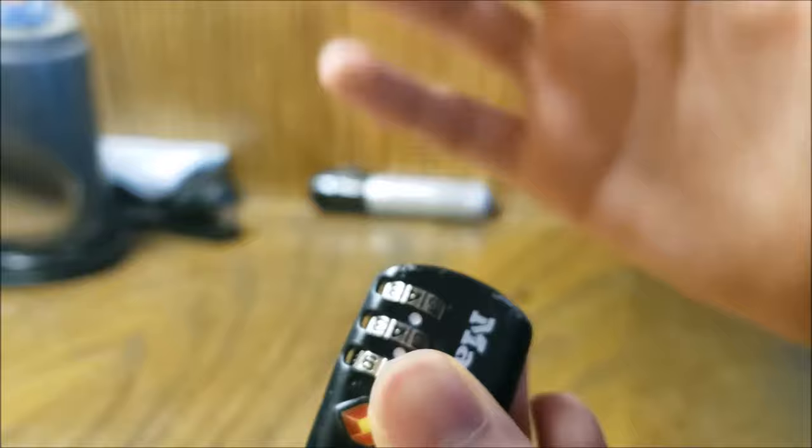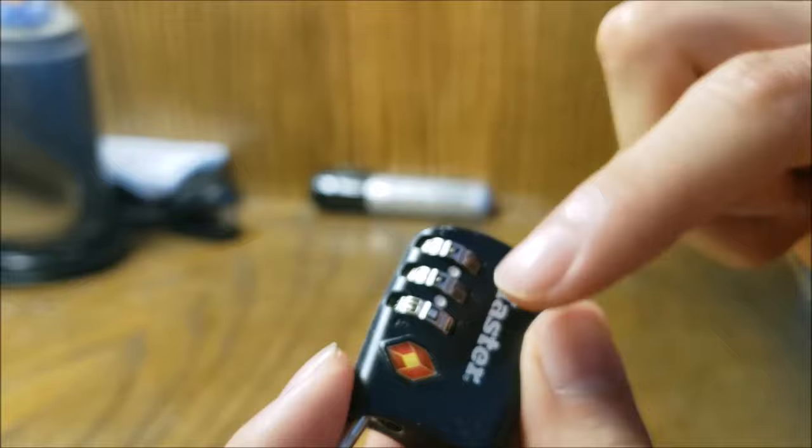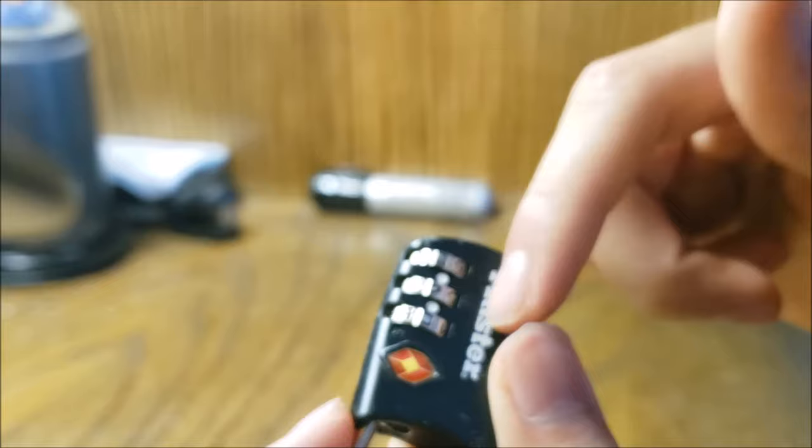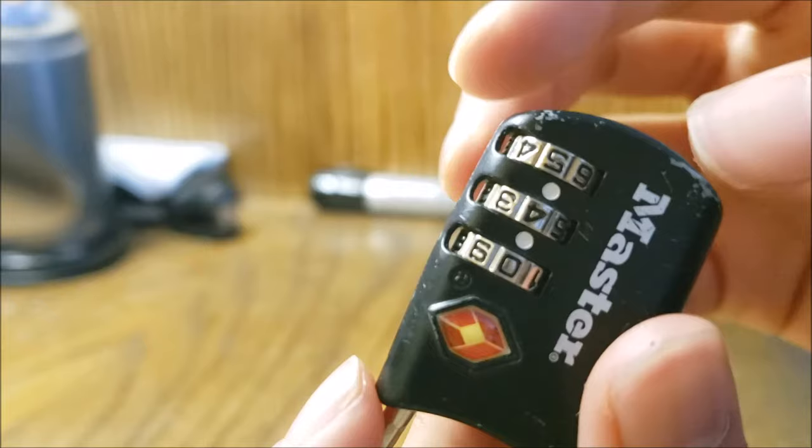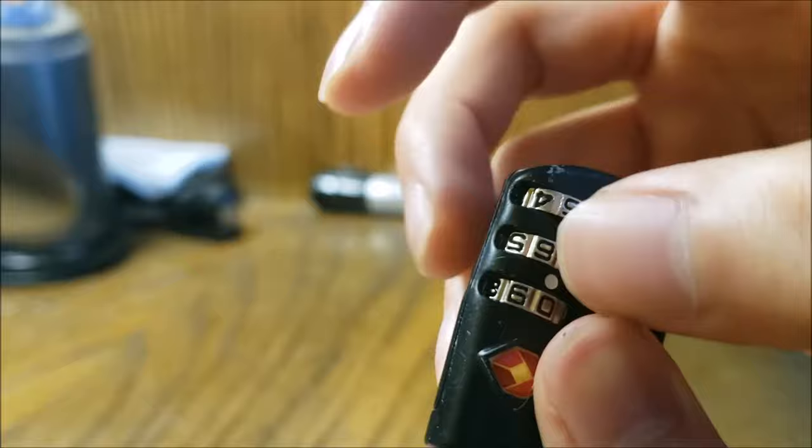So for this lock you move from the third number up. For some of them you move from the first number down. Figure out which one it is and from there you want to go to the next number, which in this case is the second number. Now you want to apply tension again and try out the number next to the one that's locking.